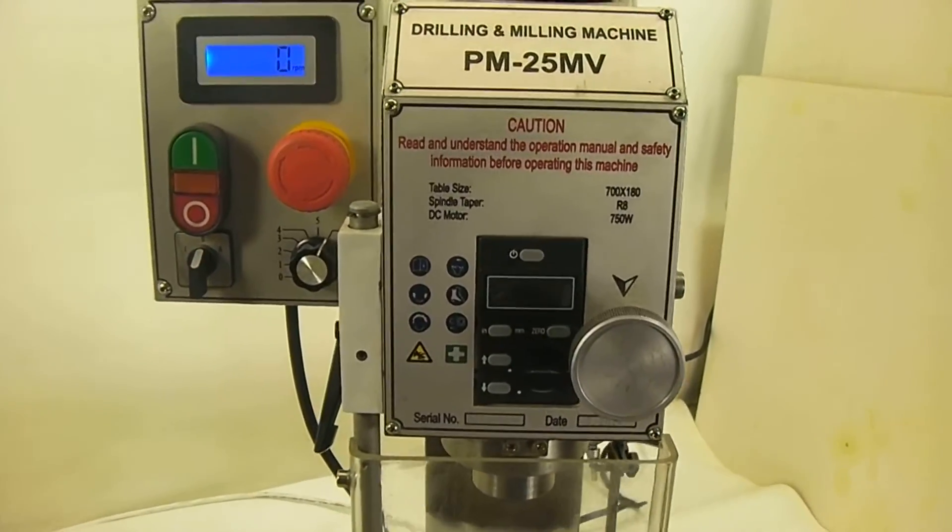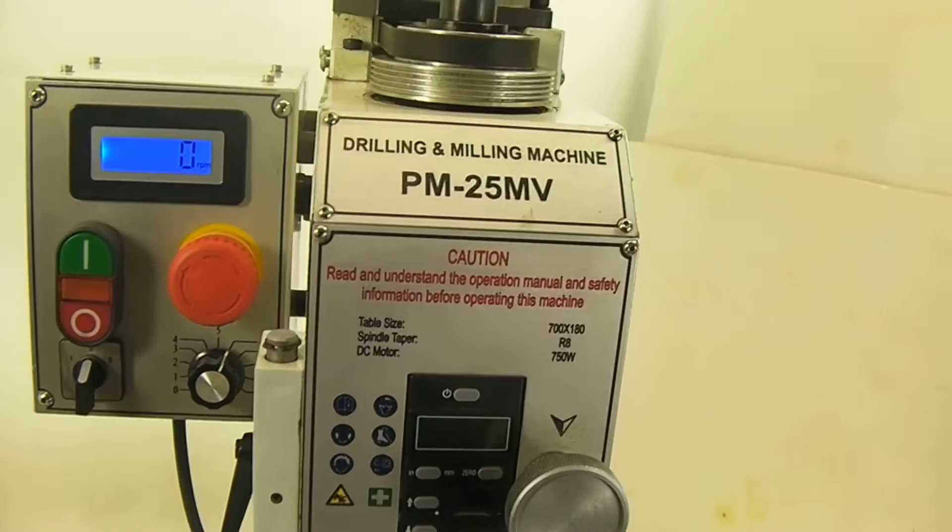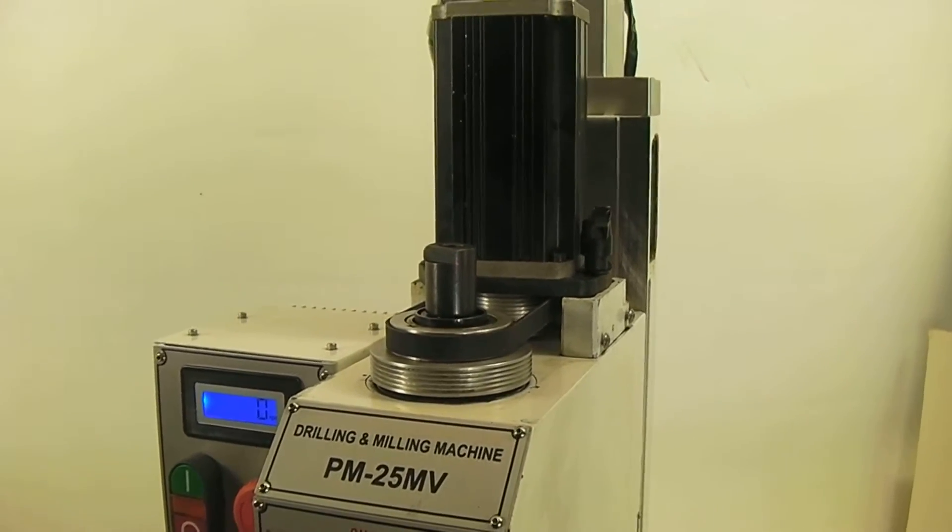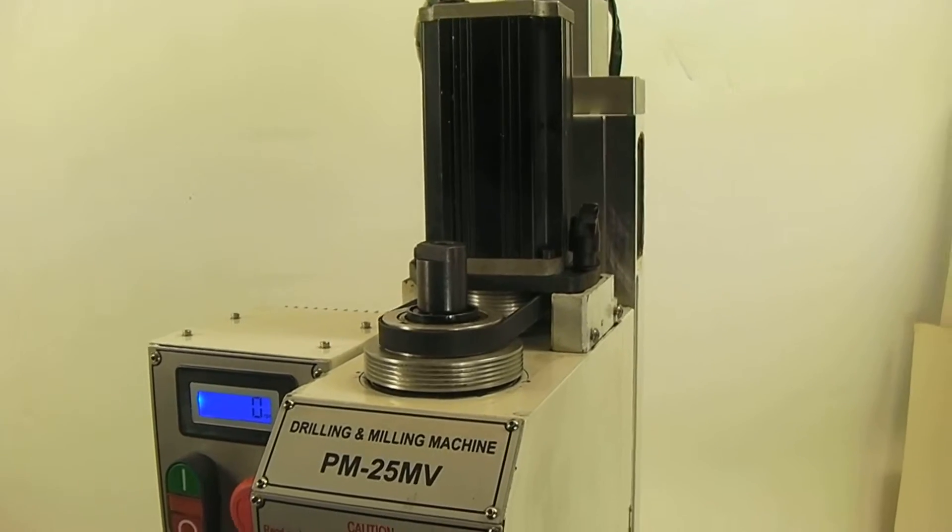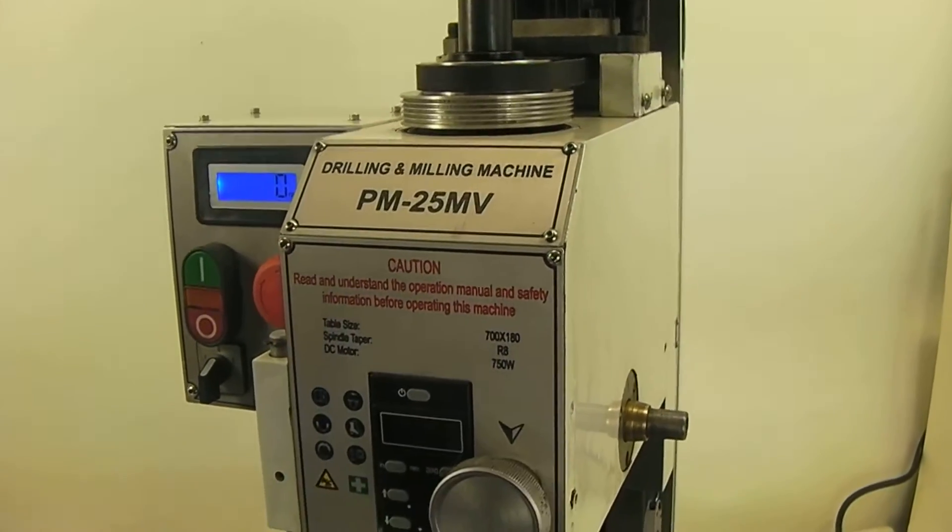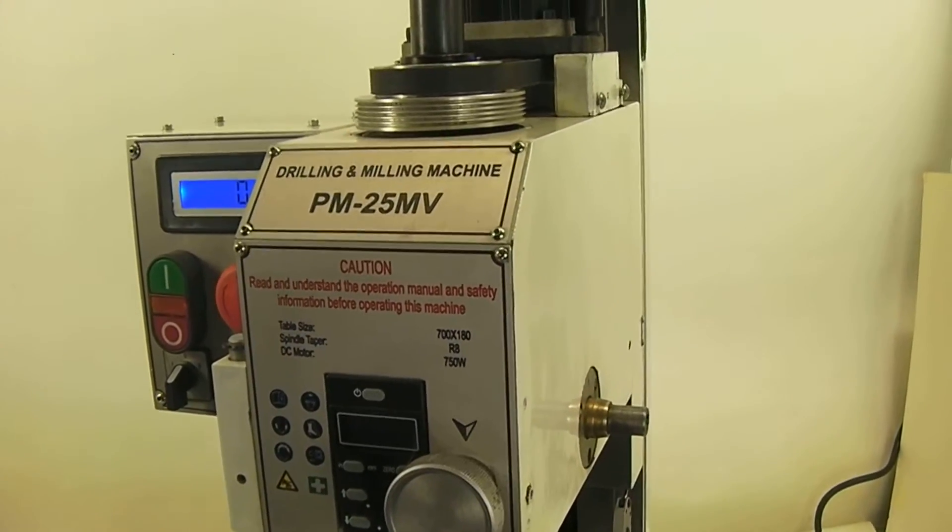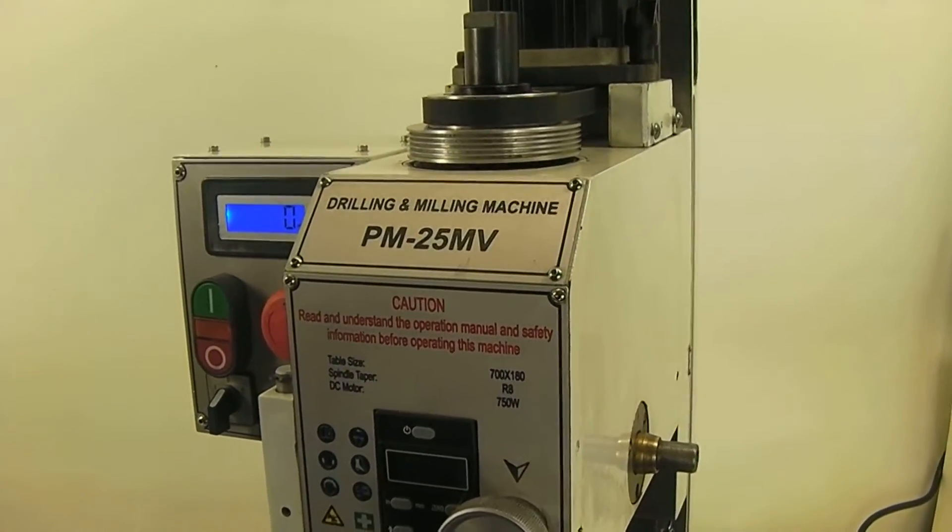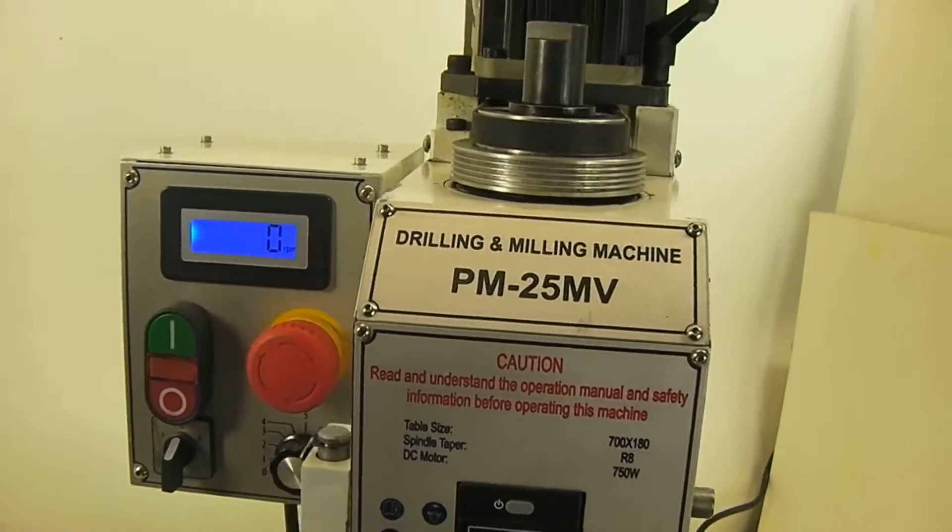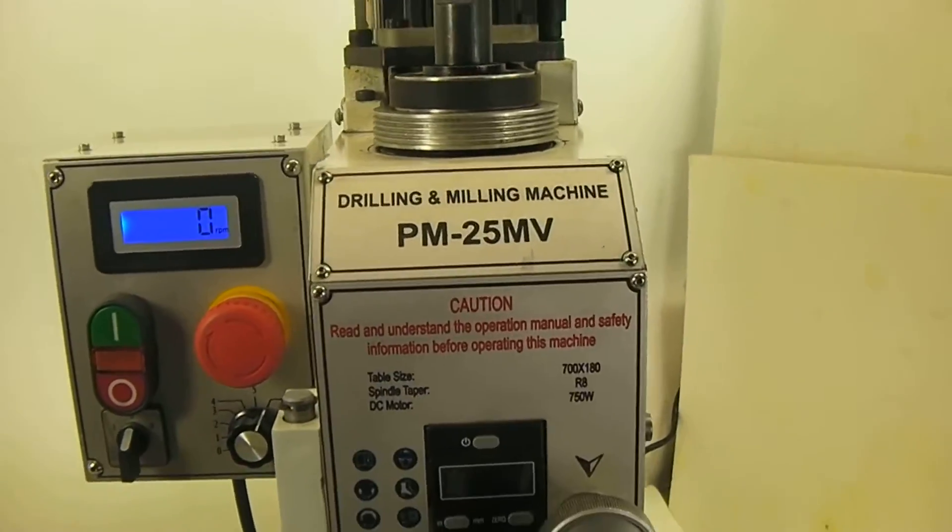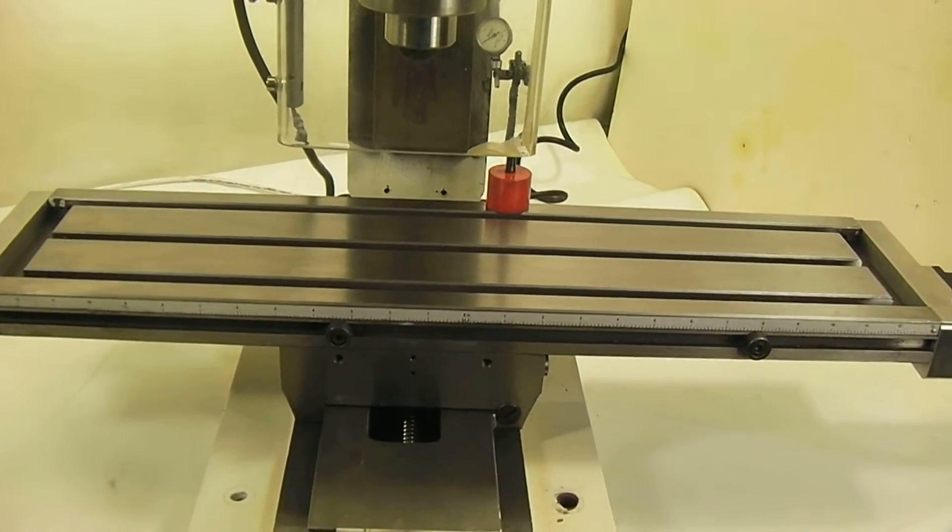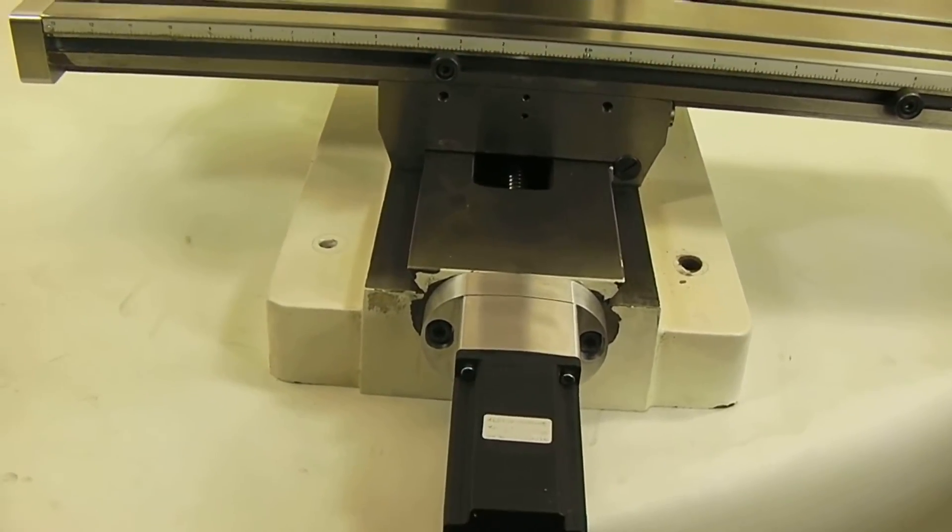For some people who haven't seen the new head and belt drive for the Precision Matthews PM25, this is a completely new mill. It doesn't really share much in common with the Weiss 25 or G0704 type of mill. The heads are very close. The table is different on this one, the base is completely different.